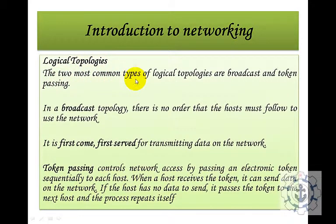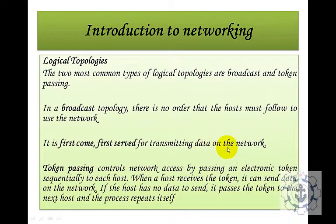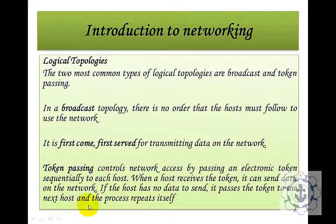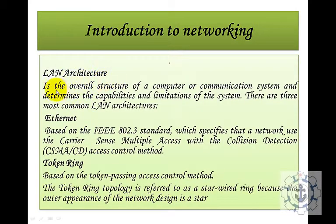The two most common types of logical topology are broadcast and token passing. In broadcast topology there is no order that hosts must follow — it is first-come, first-served for transmitting data on the network. Token passing controls network access by passing an electronic token sequentially to each host. When a host receives the token it can send data; if it has no data to send, it passes the token to the next host, and the process repeats.